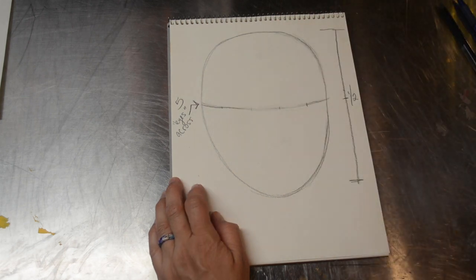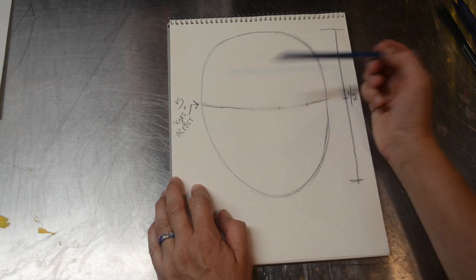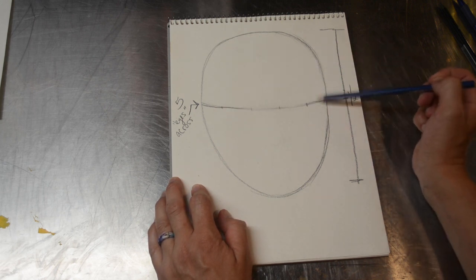So five eyes across, meaning that you have the size of an eye five times. One, two, three, four, five.